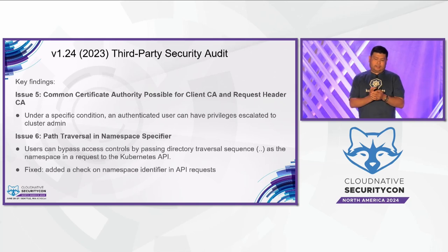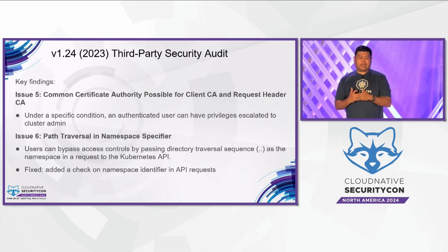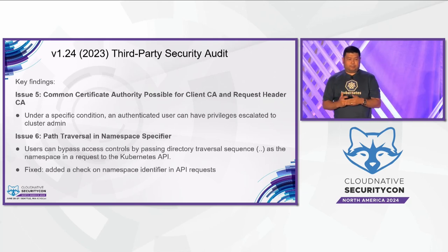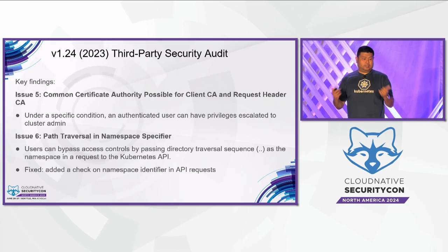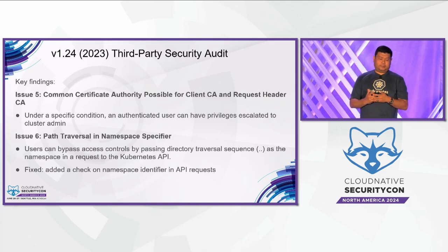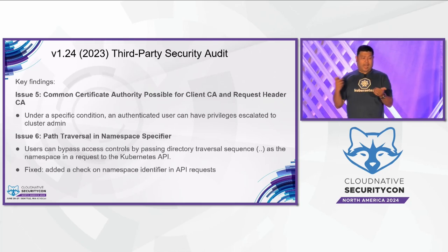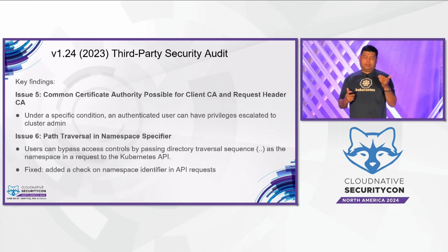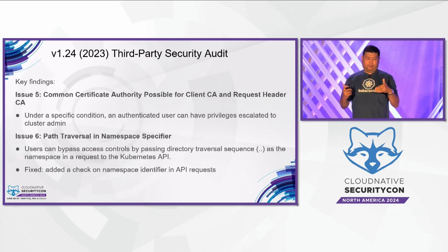The last audit was published in 2023 with 19 findings. The highest risk level was medium, and there were only six findings at that level. I'm going to highlight four of these medium-risk findings, all related to privilege escalation. The first is a common certificate authority possible for client CA and request header CA, where a user can gain cluster admin privileges when the client CA and request header CA are the same, under a specific condition involving the 'request header allowed names' setting.